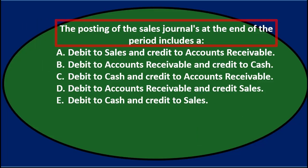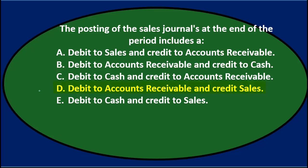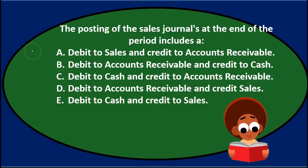Next question: the posting of the sales journal at the end of the period includes A. debit to sales and credit to accounts receivable, B. debit to accounts receivable and credit to cash, C. debit to cash and credit to accounts receivable, D. debit to accounts receivable and credit sales, E. debit to cash and credit to sales. We'll read through this and see if we can eliminate some options.